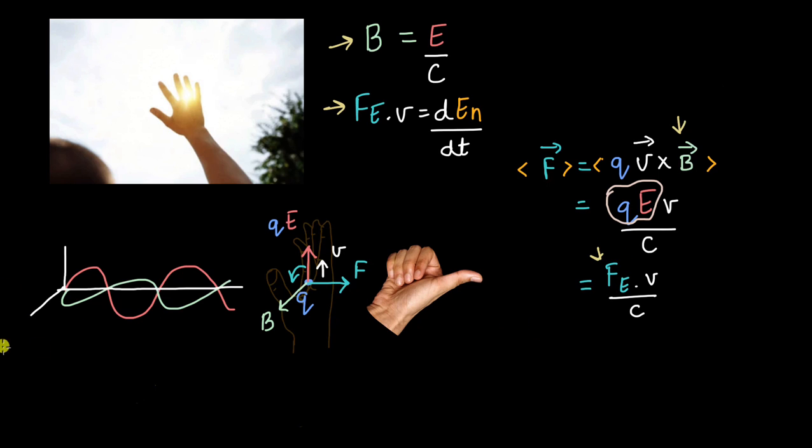Now let's place FE into V over here. So when we do that, finally, we get the average value of the force to be as 1 by C, that is 1 divided by the speed of light into the rate at which energy is transferred or absorbed by the hand. This is dE divided by dt.